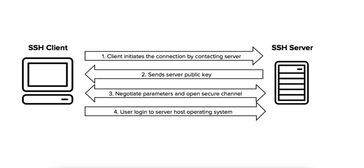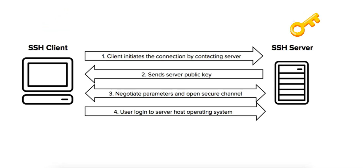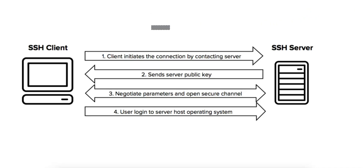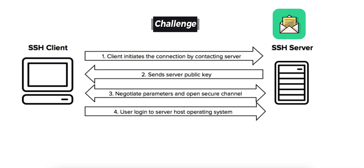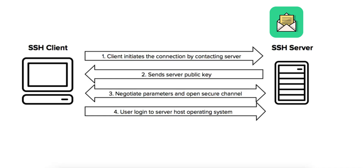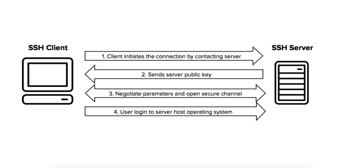Here's how public key authentication works. The client sends its public key to the server. The server checks if the public key is authorized by looking in its ~/.ssh/authorized_keys file. If authorized, the server sends a challenge — a random message encrypted with the client's public key. The client decrypts the challenge using its private key and sends the decrypted response back. The server verifies this response, and if correct, it confirms that the client has the matching private key, proving ownership.